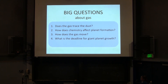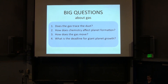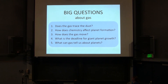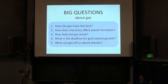Fourth: what is the deadline for giant planet growth? If you want giant planets to form, you'd better do it before the gas disk disperses. We'll talk about gas disk dispersal and some interesting recent observations pointing towards maybe a later deadline. And fifth: what can gas tell us about planets? We'll go back to transition disks and talk about how gas observations can disambiguate questions about where transition disks come from and what physical processes surround their evolution.